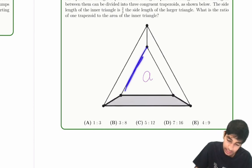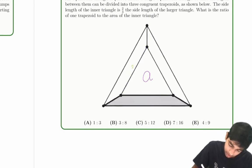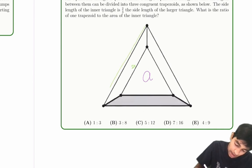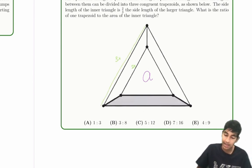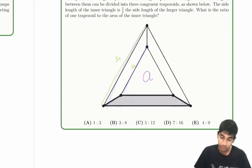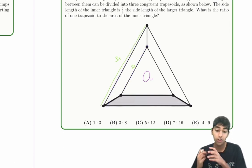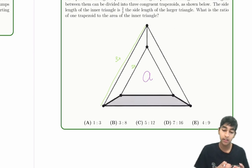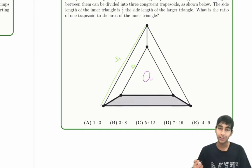Notice over here the side length — let's call it 2x — is two-thirds the entire triangle's 3x side length. It's two-thirds: 2x over 3x. So if the side length ratio is 2x to 3x, what is the ratio of the areas of these triangles?